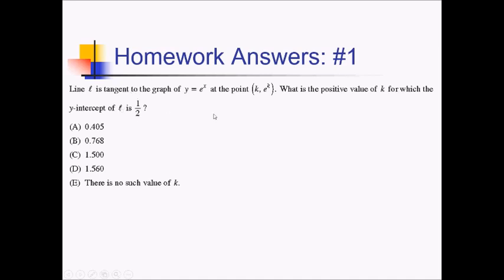So let's start by writing the tangent line. For that we need an x and a y value, which they sort of gave us, and we need a slope. For the slope, we need the derivative of our original function, which is also going to be e to the x. And we need the derivative specifically at the k value that we have for x. So y prime of k is e to the k.